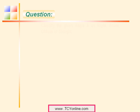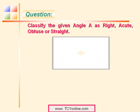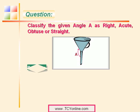Now let's look at one more question. We need to classify the given angle A as right, acute, obtuse, or straight. This is a figure of a measuring funnel and we need to identify angle A. When we look at this angle, we find that it is not a straight angle because it is not making a straight line, and neither is it a right angle because it is not measuring 90 degrees. It appears to be more than 90 degrees, so this is simply an obtuse angle.